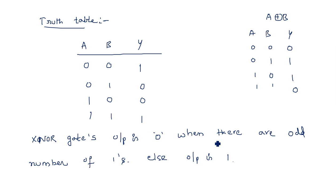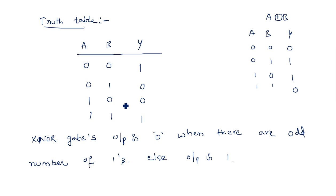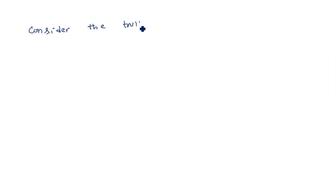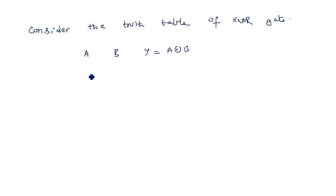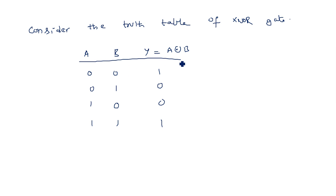Now let's see what other gates we can design using the XNOR gate. Looking at the two-input XNOR truth table again — inputs A and B with output Y = A XNOR B: 0,0→1; 0,1→0; 1,0→0; 1,1→1. If we fix one input A to logic 0 and vary B, when B = 0 the output is 1, and when B = 1 the output is 0. We can observe a NOT operation here.